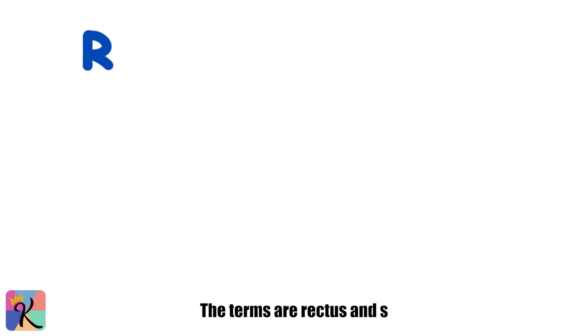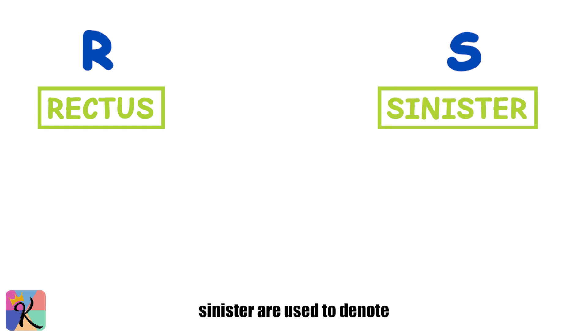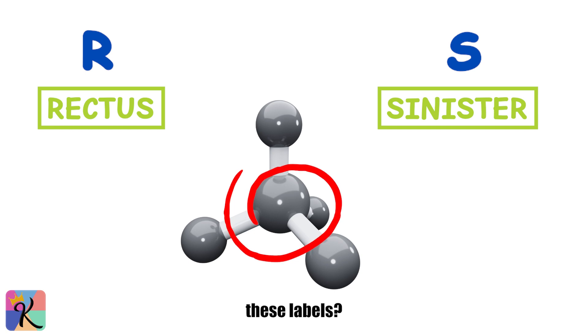It's like having a map with exact coordinates, so you know precisely where every group is located around the central atom. The terms R, rectus, and S, sinister, are used to denote absolute configurations at a chiral center. But how do we assign these labels? Let's break it down with a systematic approach.